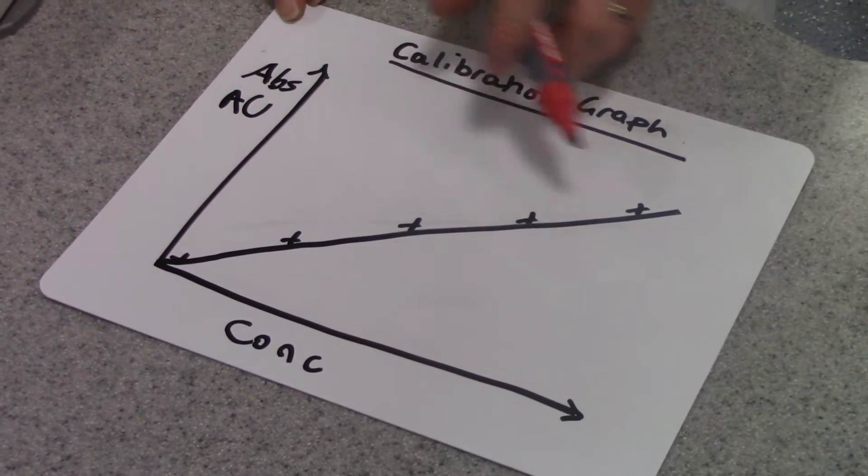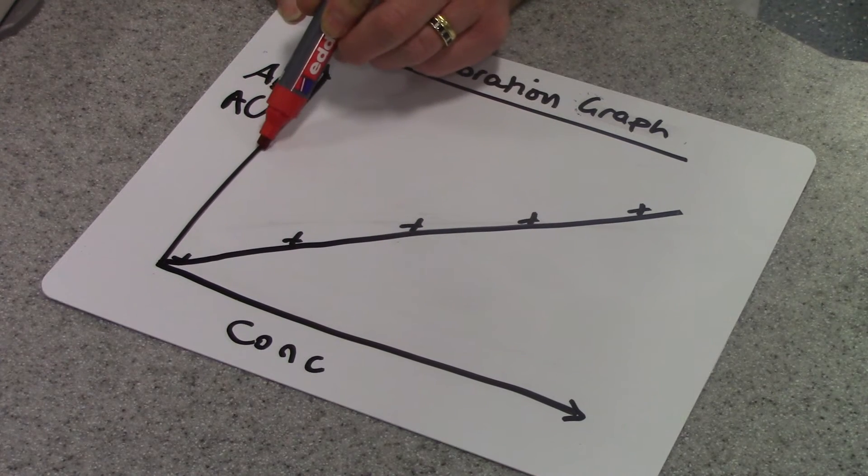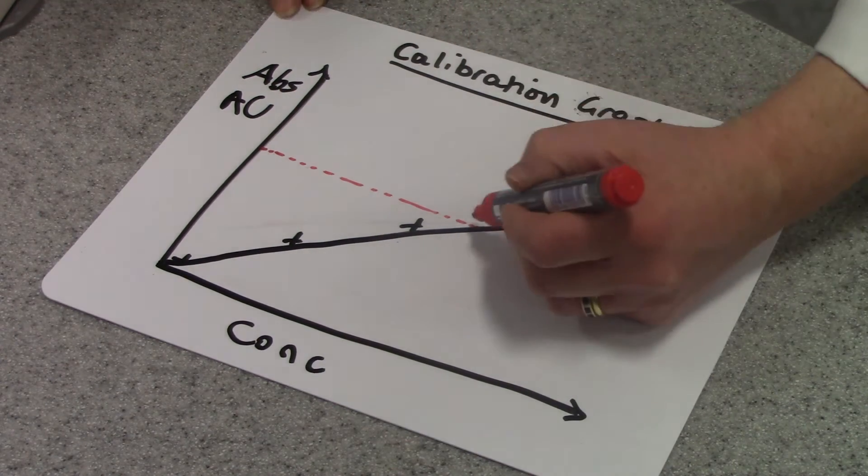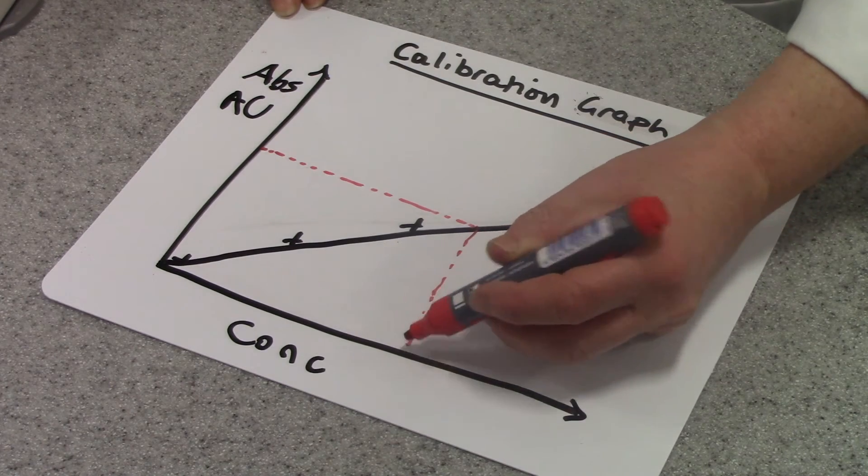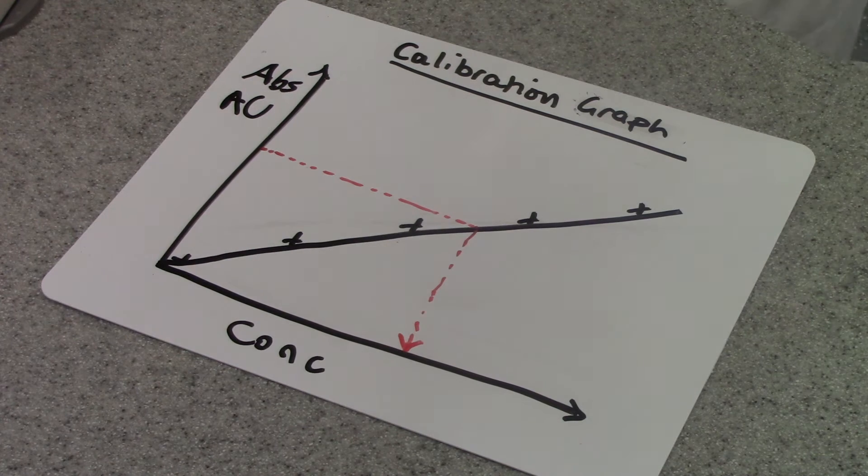So then I look at my calibration graph. I can take my absorbance value and, for example, say it's here. And I read across until I reach my line, and then I can read down. And that will give me the concentration of my unknown solution.